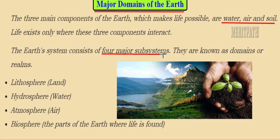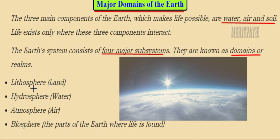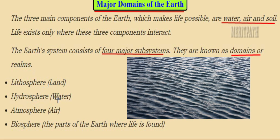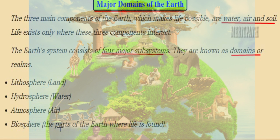This planet earth consists of four major subsystems, known as domains or realms. What are the names of these four subsystems? They are lithosphere (land), hydrosphere (water), atmosphere (air), and biosphere. Biosphere means the part of the earth where life is found. Now let's study in detail about these four domains of the earth.